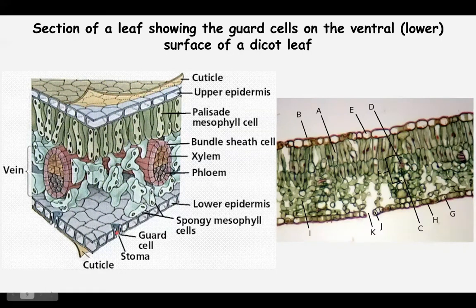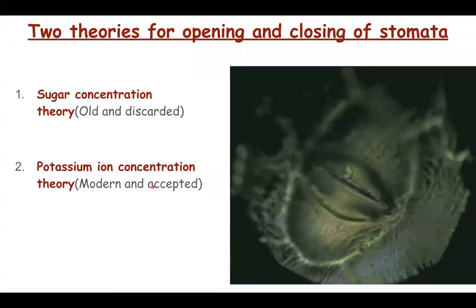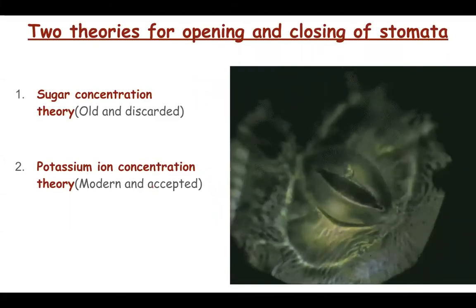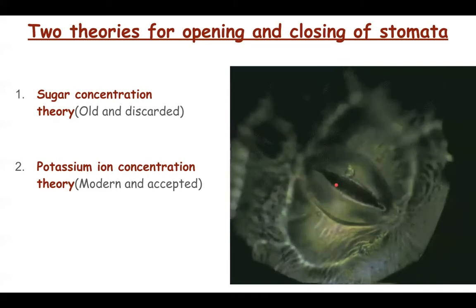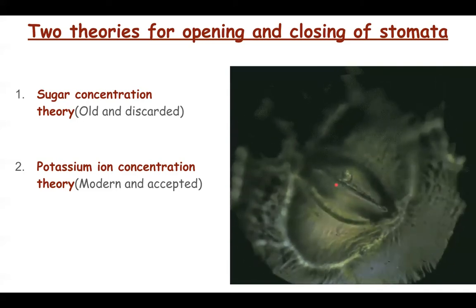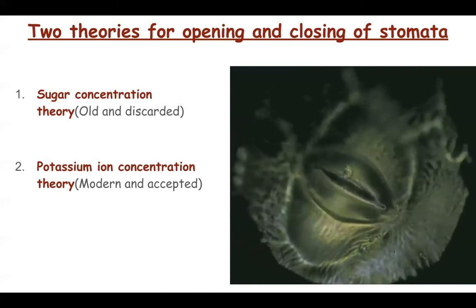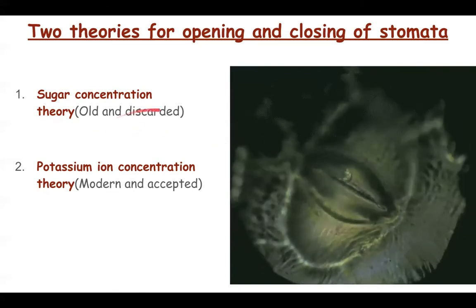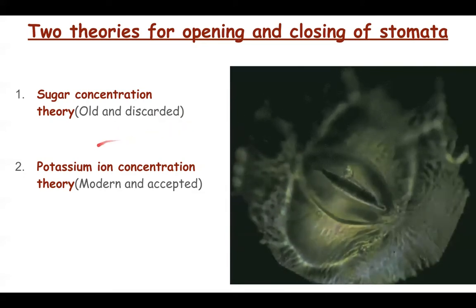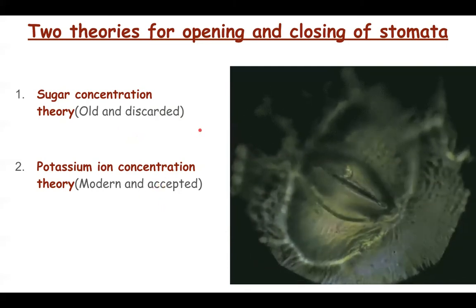The guard cells will be the first structure which facilitates photosynthesis. These guard cells regulate the opening of a structure called stoma by opening and closing. This is explained by two theories. One is called the sugar concentration theory — this is the old theory, now discarded but still studied. The potassium ion concentration theory is the modern and accepted theory. Let's study these two in detail.